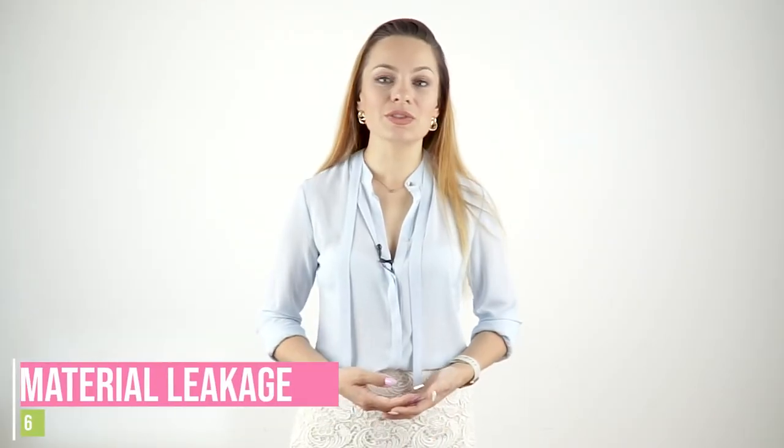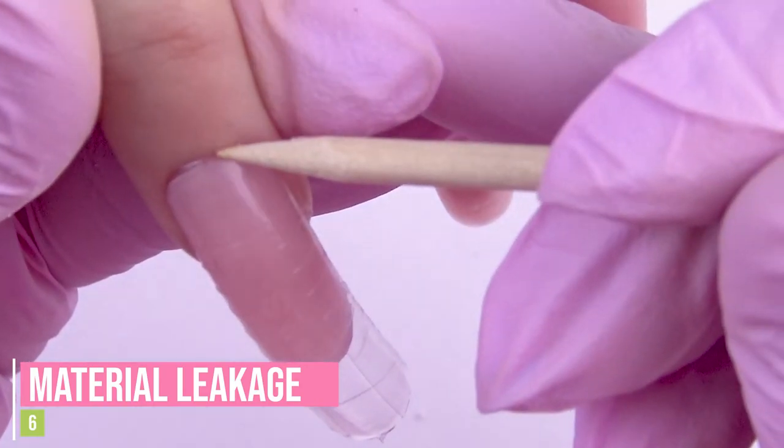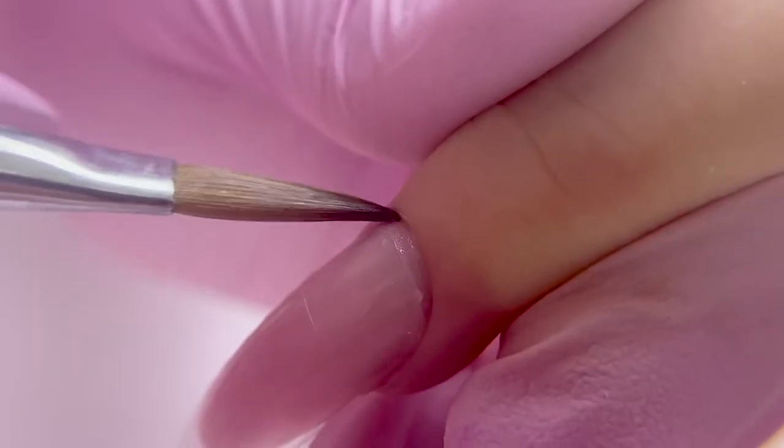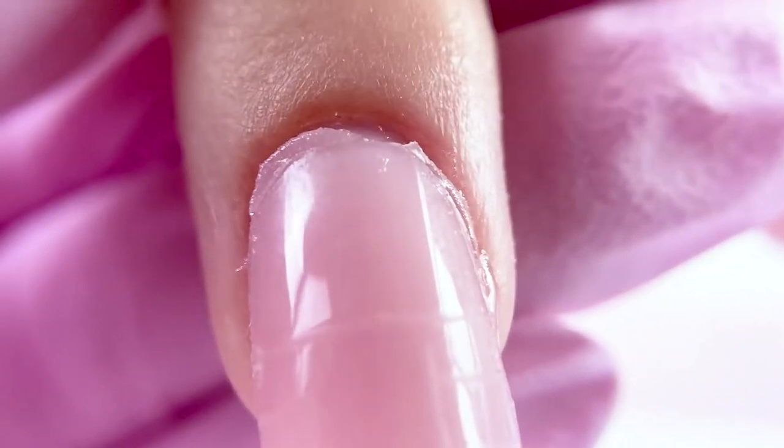The sixth issue is the material leakage. Anything that went beyond the form needs to be cleaned up with an orange stick or a brush, because every leakage is a future lifting. Often the material gets under the cuticle and you just can't see it. Examine the area carefully in order to avoid the leaks.